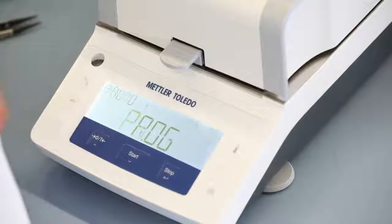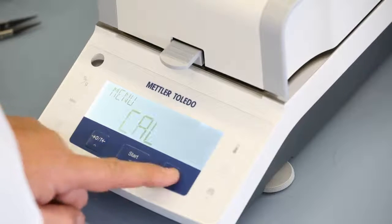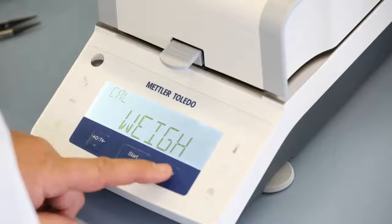To adjust the weighing unit, press the menu button, scroll to calibration and select weight calibration.